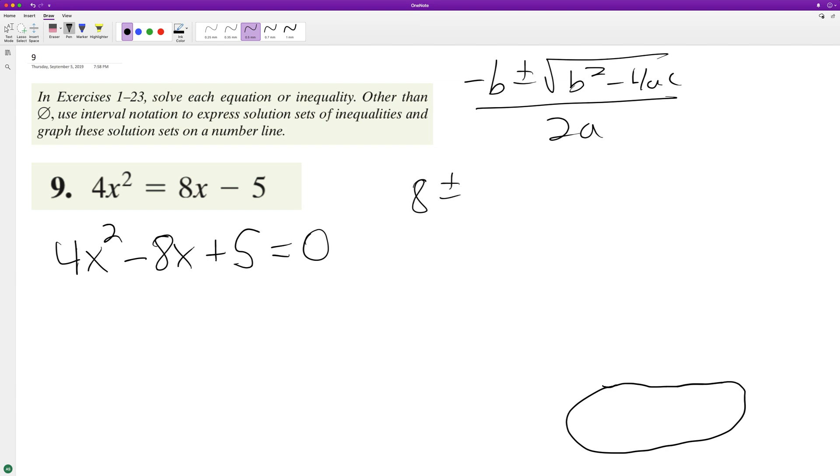Which is going to be 8 plus or minus the square root of B squared, which is 64, minus 4 times a, which is 4, times c, which is 5, all over 2 times a, which is 4. So 8 plus or minus square root of 64 minus—that's 4 times 4 is 16 times 5.